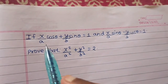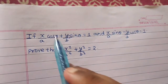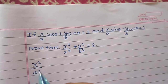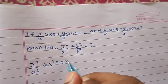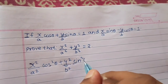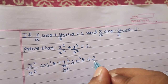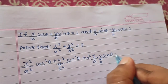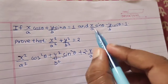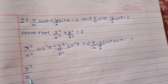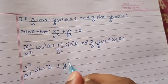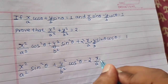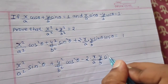Since we want x²/a², it looks as if we are squaring this, so let's square both equations and then add them. Squaring the first equation gives x²/a²·cos²θ + y²/b²·sin²θ + 2·(x/a)·(y/b)·sinθ·cosθ = 1. Squaring the second gives x²/a²·sin²θ + y²/b²·cos²θ − 2·(x/a)·(y/b)·sinθ·cosθ = 1.